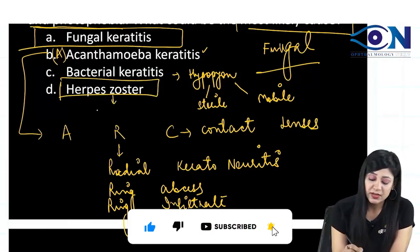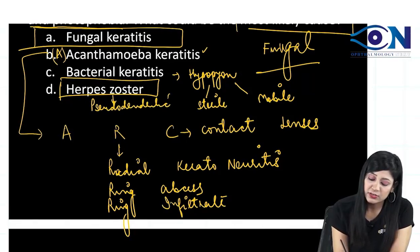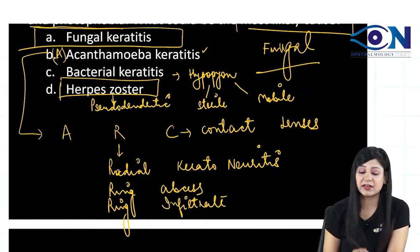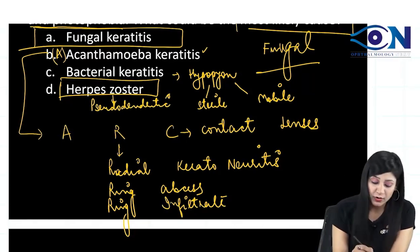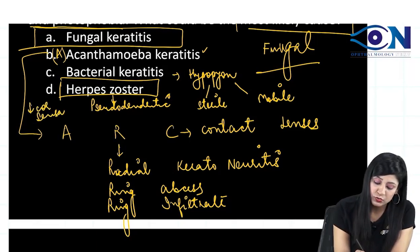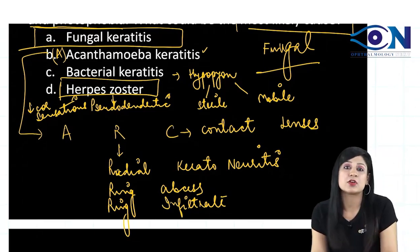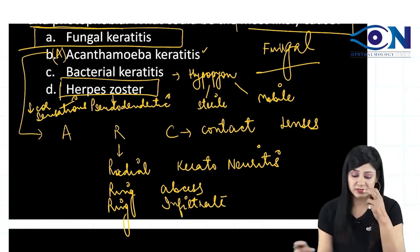In herpes zoster, you will get pseudodendritic lesions and decreased corneal sensations — these are two important features of herpes zoster keratitis.